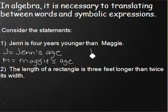We know that Jen is four years younger than Maggie, so Jen's age is equal to Maggie's age M minus four.